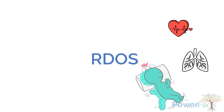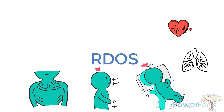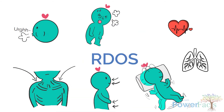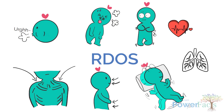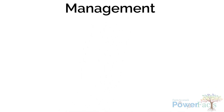RDOS comprises the following components: heart rate per minute, respiratory rate per minute, restlessness where the patient moves around non-purposefully, abnormal breathing patterns such as the patient's abdomen moving inward when breathing in, use of accessory muscles, grunting when the patient breathes out, nasal flaring where the patient's nostrils are widened during breathing, and look of fear.